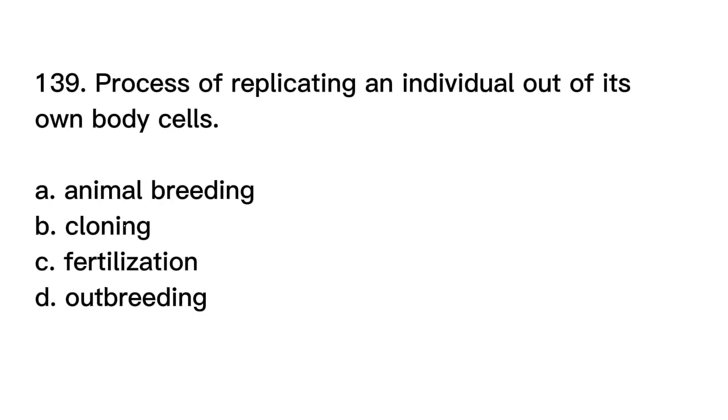Number 139. Process of replicating an individual out of its own body cells. A. Animal breeding. B. Cloning. C. Fertilization. D. Outbreeding. Correct answer is letter B. Cloning.